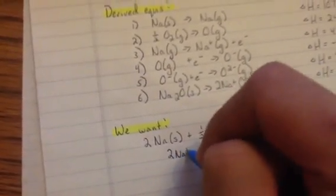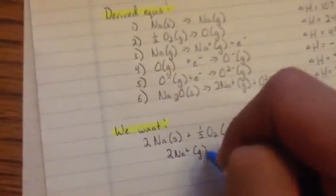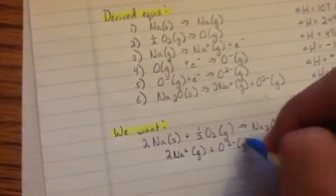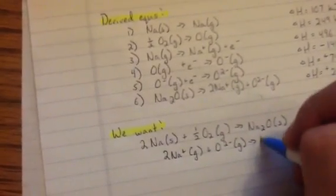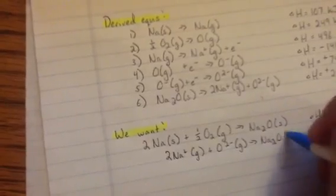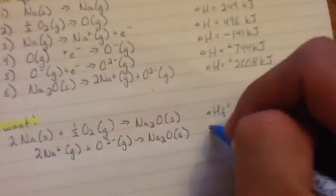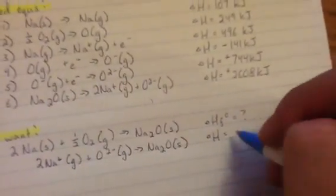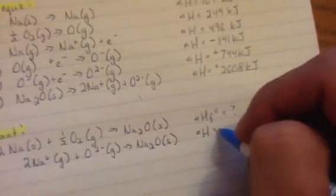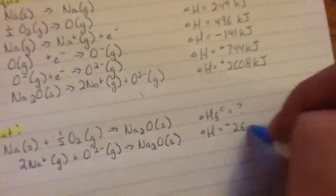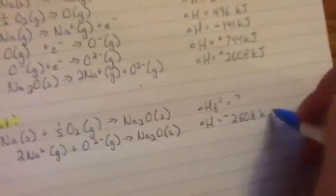So what I'm going to write in is I'm going to say we start off with 2 Na plus in gaseous form. I'm going to add an oxygen 2 minus in a gaseous form. We're going to end up with an Na2O solid form. And keep in mind, we're going to be switching the sign here. So my enthalpy of this is not going to be positive 2,608, it's going to be negative 2,608 kilojoules.